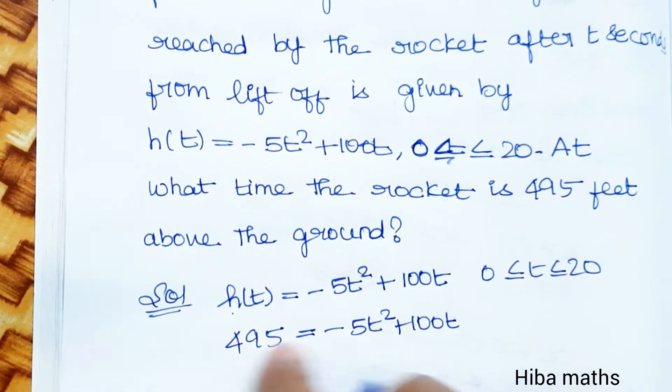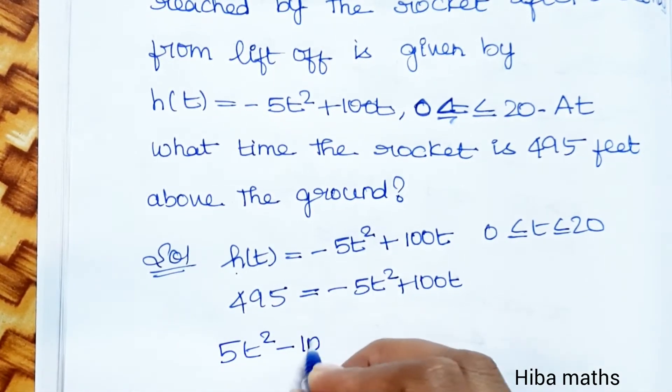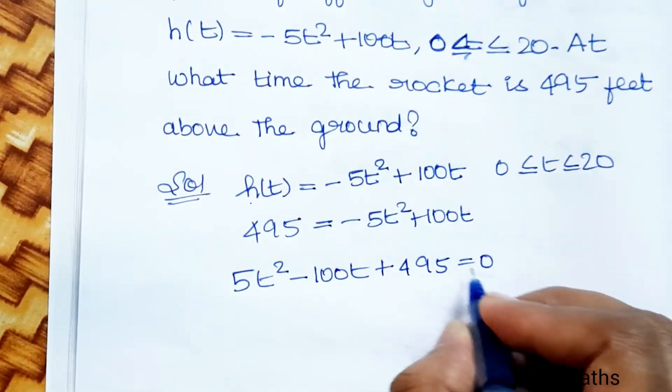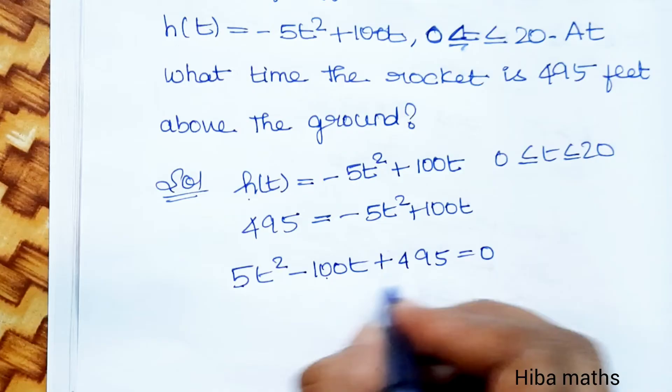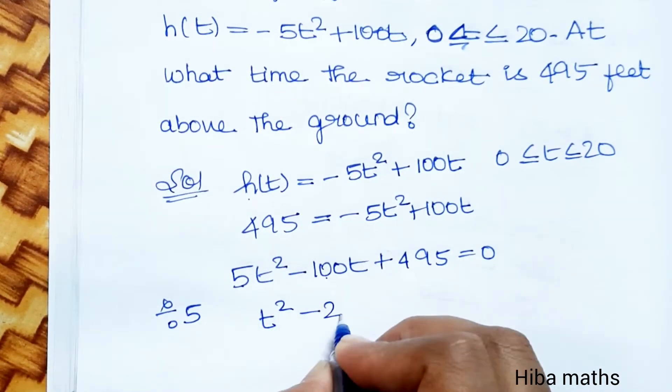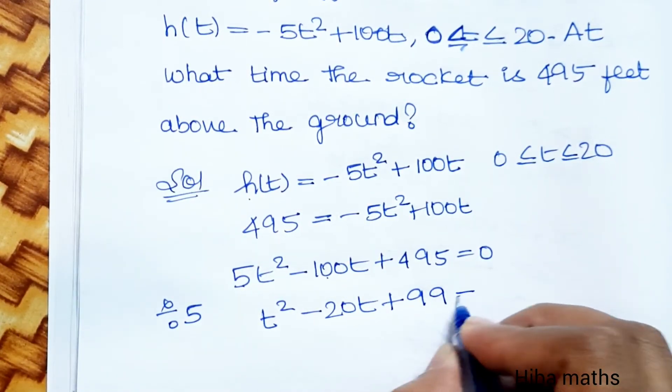Moving terms to one side: 5t squared minus 100t plus 495 equals 0. Now dividing by 5: t squared minus 20t plus 99 equals 0.